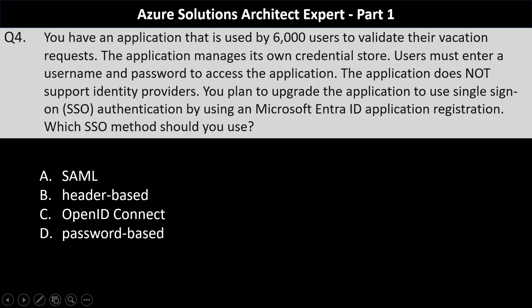Fourth question. You have an application used by 6000 users to validate their vacation requests. The application manages its own credential store and users must enter a username and password to access it. The application does not support identity providers. You plan to upgrade the application to use single sign-on authentication using a Microsoft Entra application registration. Which SSO method should you use? Your options are SAML, header-based, OpenID Connect, and password-based. The key to answering this question is that users must enter a username and password, and the application manages its own credential store — so you will use password-based SSO.